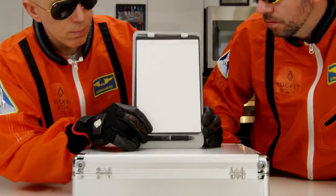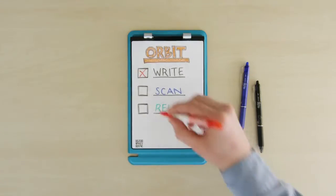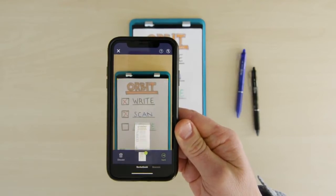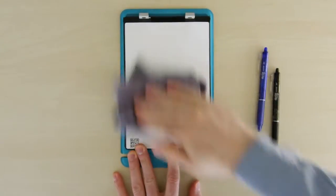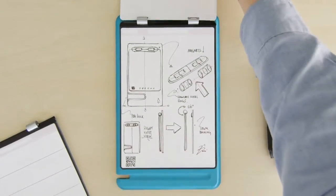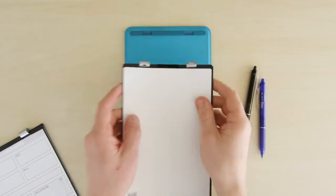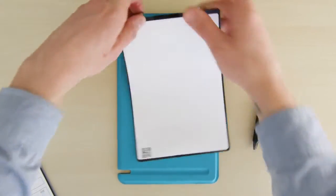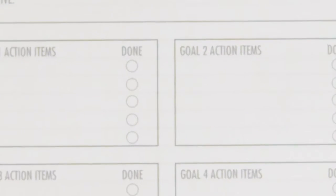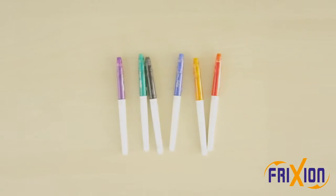The Orbit uses Rocketbook technology which allows you to write, scan, erase and reuse your notes like other Rocketbook notebooks. But with the Orbit you can also flip, flop and swap your pages out whenever you want. Here's how it works. Write on the pages using any pen from the Pilot Frixion line.